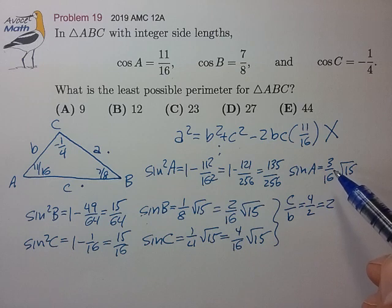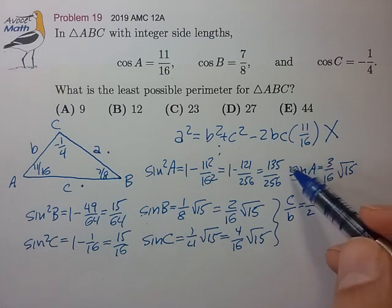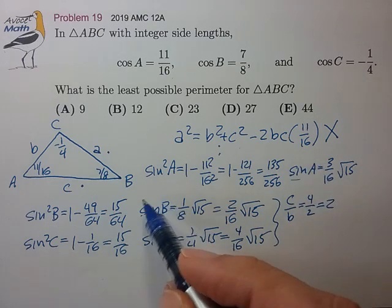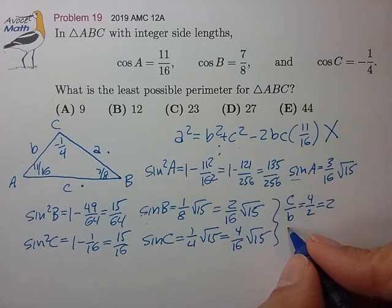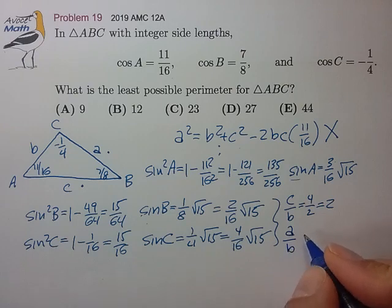And likewise, we can determine that sine A is to sine B as 3 is to 2. So that tells us that A over B is equal to 3/2.